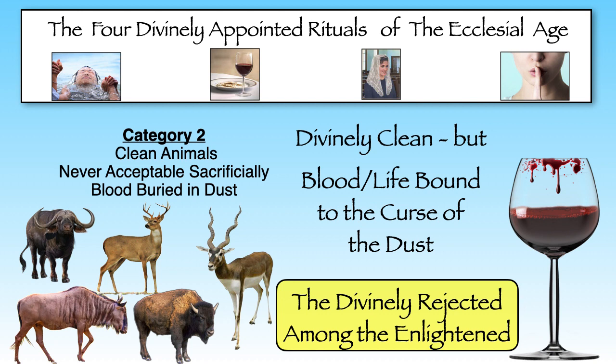These are the ones Jesus repeatedly warns will be weeping and gnashing their teeth at his judgment. These are the five lazy wedding attendants, the lazy servant who hid the one talent he had been given to invest, and the goats in the three judgment parables in Matthew 25. The fact that there are far more clean animals whose blood is unacceptable at the Christ altar than the few that were acceptable is testimony of how Jesus warns us that many are going to be called to the judgment of Christ, but only a few of those called will actually be chosen by him.